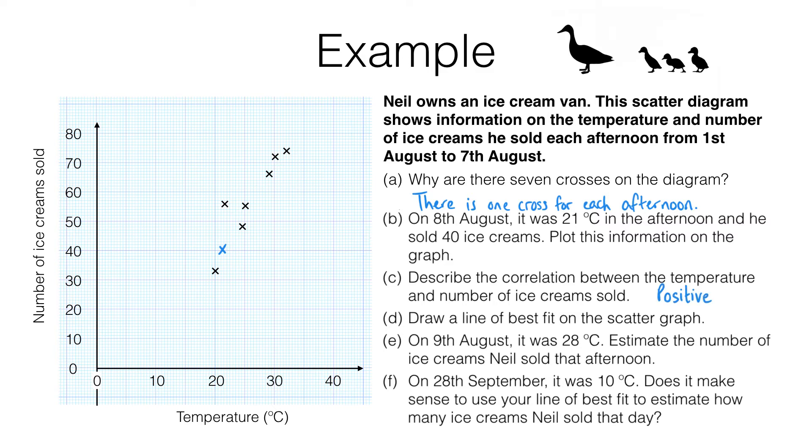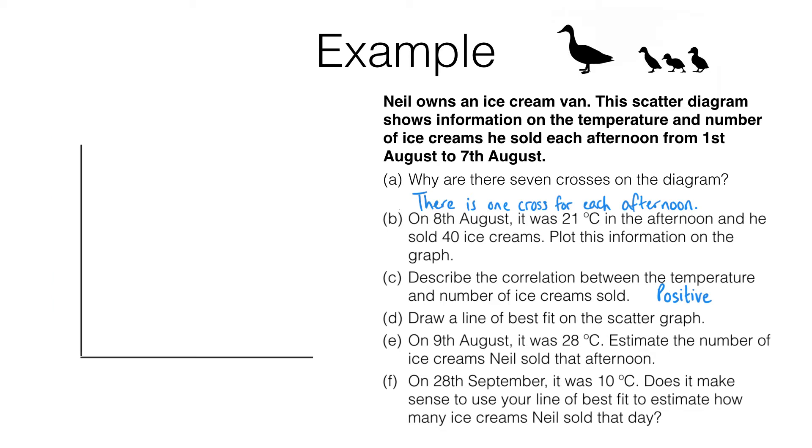You have a positive correlation if when one variable increases, then the other also increases. For a negative correlation, imagine instead the graph of the sale of woolly hats against temperature. The warmer it gets, the fewer woolly hats will get sold, so a scatter diagram might look like this.